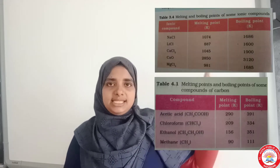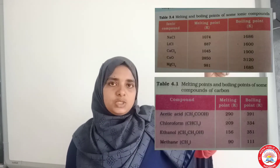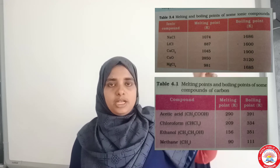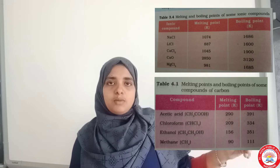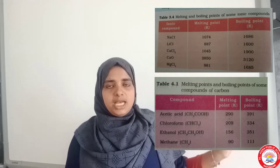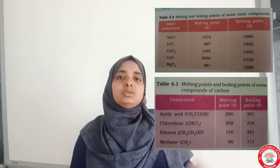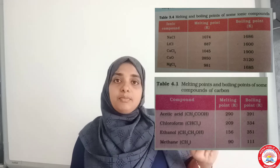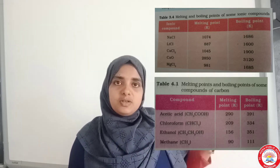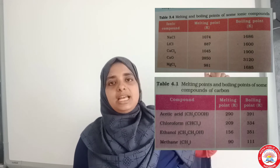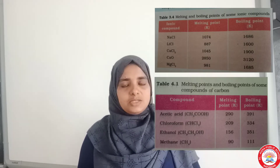The first topic is bonding in carbon. In the last chapter we discussed about ionic compounds. Here we can see two tables: the first one is ionic compounds and their melting and boiling points, and the second one is carbon compounds and their boiling and melting points. Please compare these two tables. After comparing, we can conclude that the melting and boiling point of carbon compounds are less than those of ionic compounds. Why is it so?